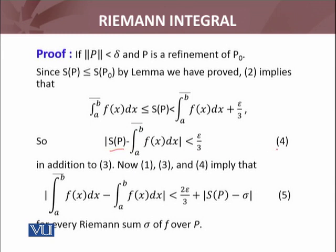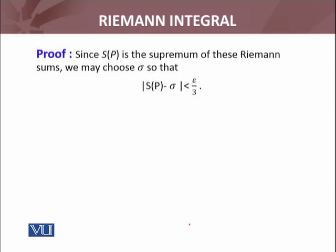Now using all these inequalities (4) and (2) that we used earlier with the triangle inequality, the objective I told you is to make this less than ε. Using all of these, we get < 2ε/3 + |S(P) - σ| for every Riemann sum σ of f over P.